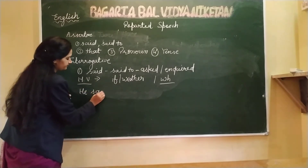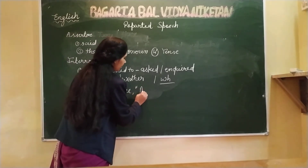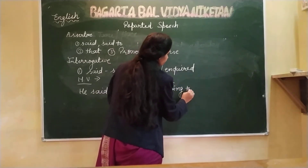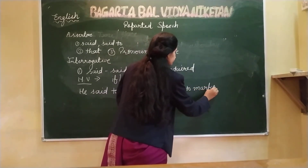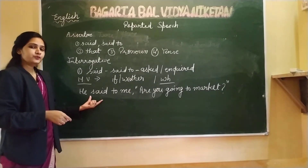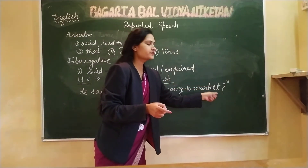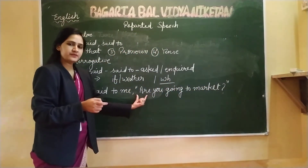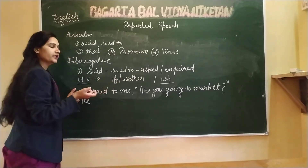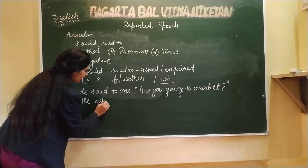Let's look at both examples. The first direct sentence is: He said to me, "Are you going to market?" When changing this to indirect form, first I identify it as interrogative, and second, it starts with a helping verb. So I write: He asked me — you can write 'asked' or 'inquired', your choice.